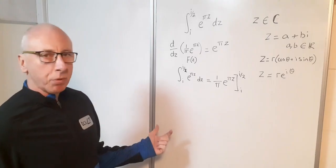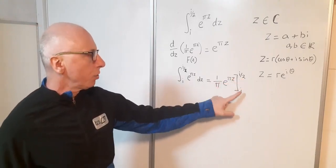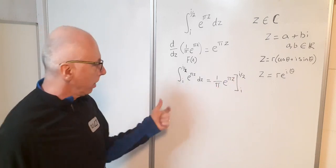Well that should be pretty straightforward. Where I see a z I'll plug in that, and then subtract when z equals that.